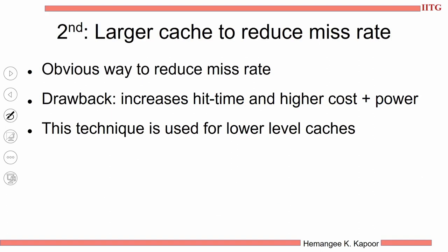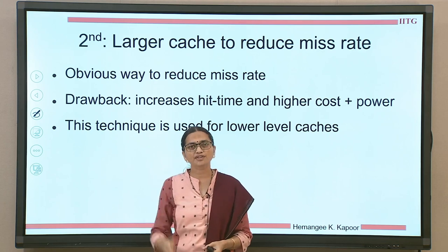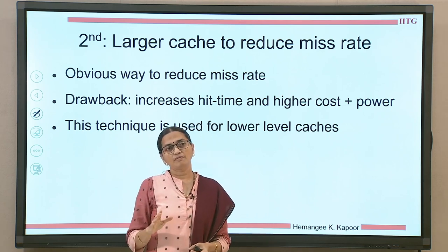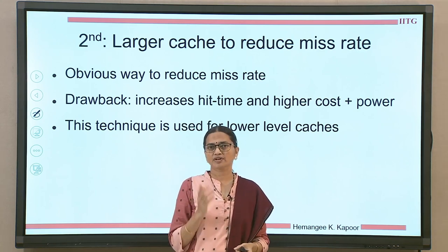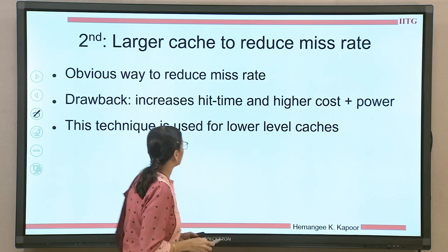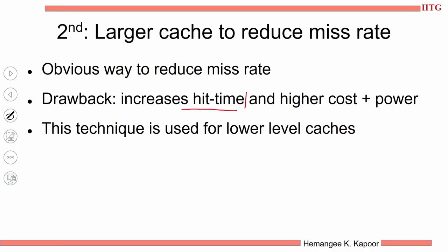Having a larger cache is very intuitive — have as big a cache as possible because after the compulsory misses you won't encounter many misses. So an obvious way to reduce the miss rate is to have a larger cache. The drawback is that the larger the cache, the more the hit time, more costly because faster cache memories are expensive, and also more power hungry. So it increases hit time, cost, and power. We can use this optimization for lower level caches because they can afford to have a slightly higher hit time.